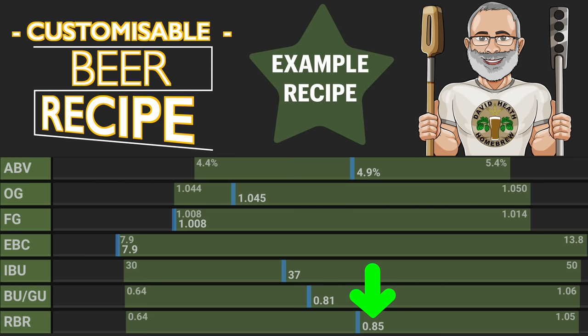Below the BUGU ratio is RBR, which is short for Relative Bitterness Ratio, and also a very useful gauge for recipe writing. This is very similar to our BUGU ratio and both share the same purpose and work in a similar way, with higher numbers meaning higher levels of bitterness. RBR however seeks to improve on the accuracy of BUGU by factoring in how much of your brewed sugars are eaten by your chosen yeast, which is known as attenuation. In this case you can see that by factoring this in, RBR reports this recipe as having a ratio of 0.85, which predicts that this recipe for a Pale Ale is having a medium bitterness, which is certainly not a bad place to be at all.